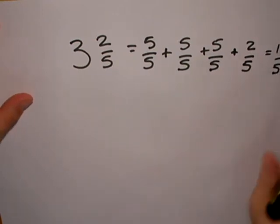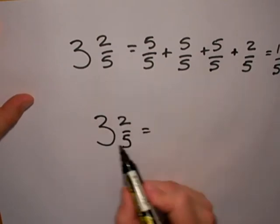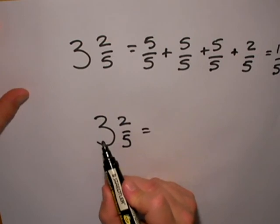Now, I wouldn't always work it out like that, so 3 and 2 fifths. Every whole 1 is worth 5 fifths.